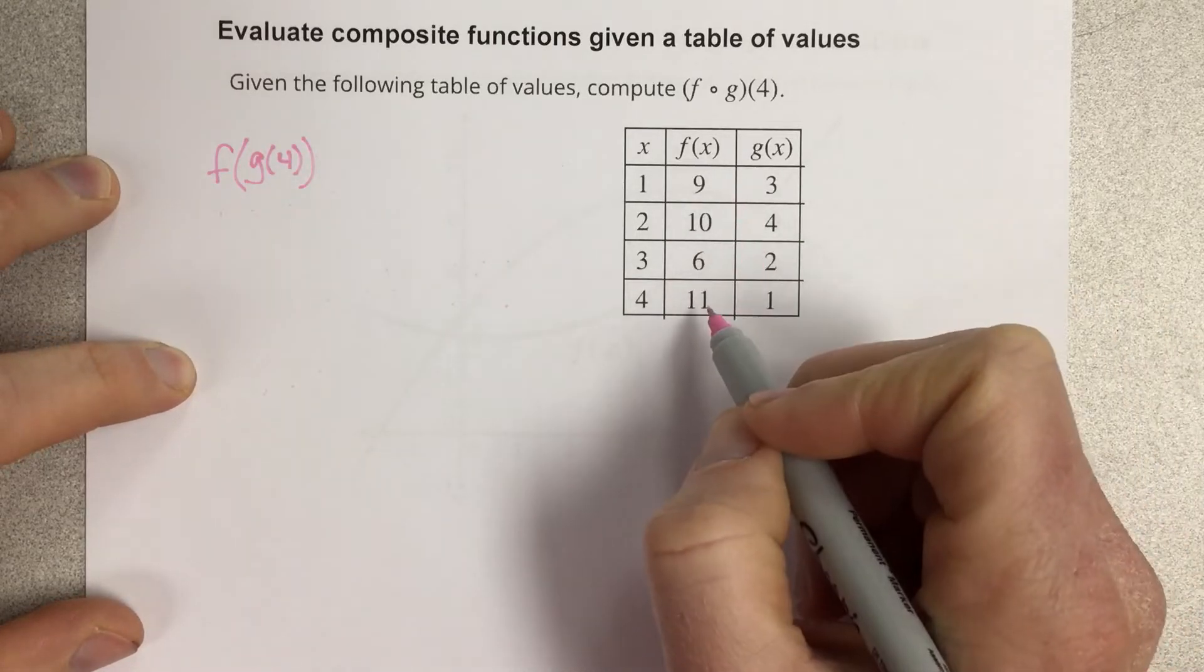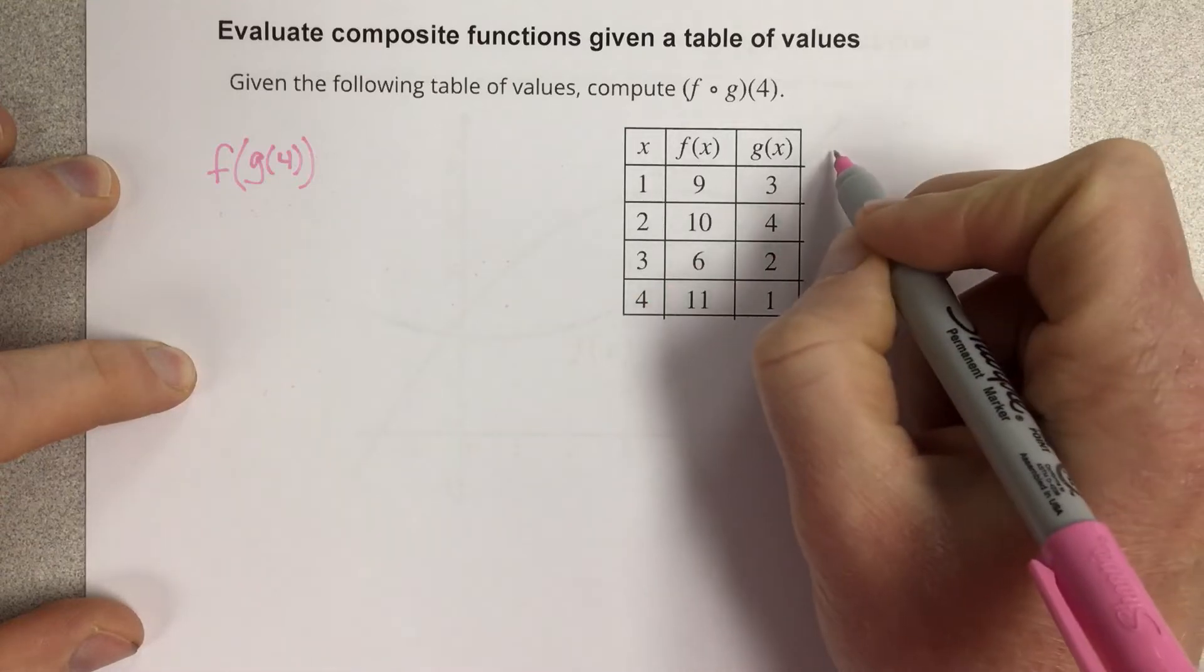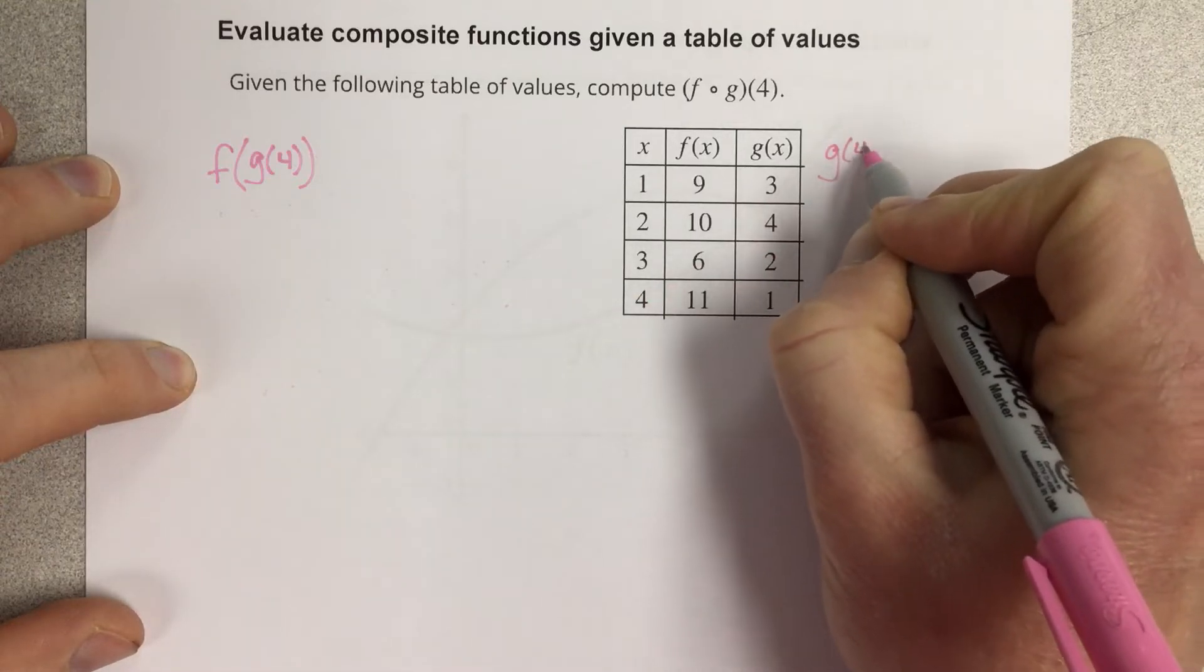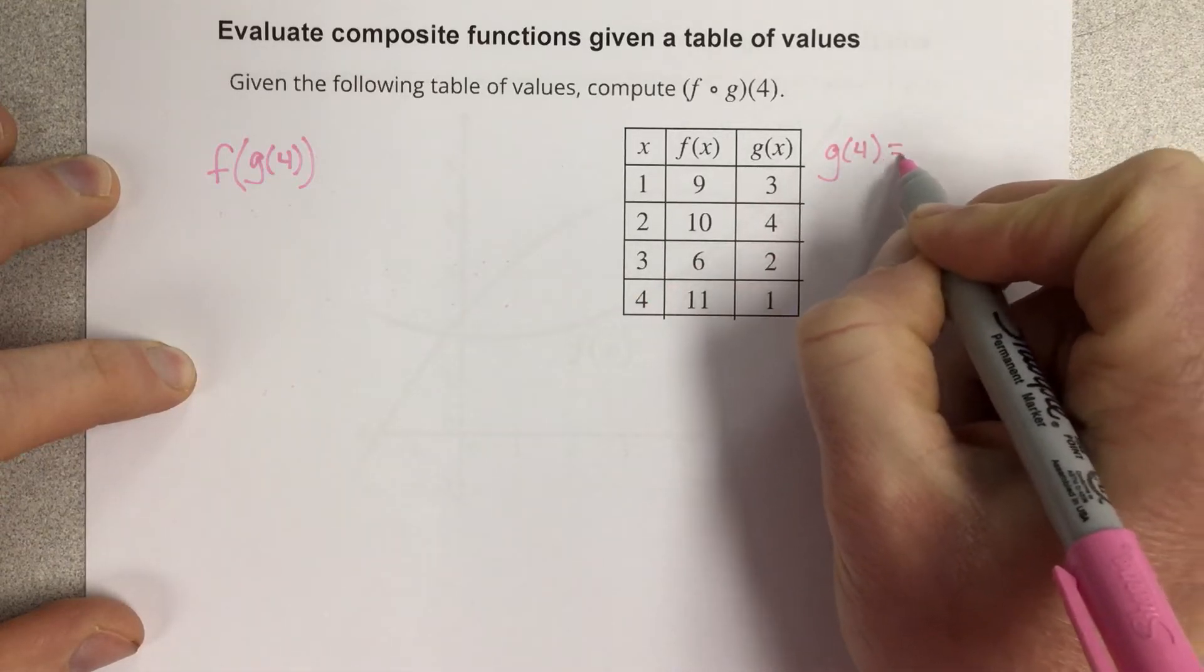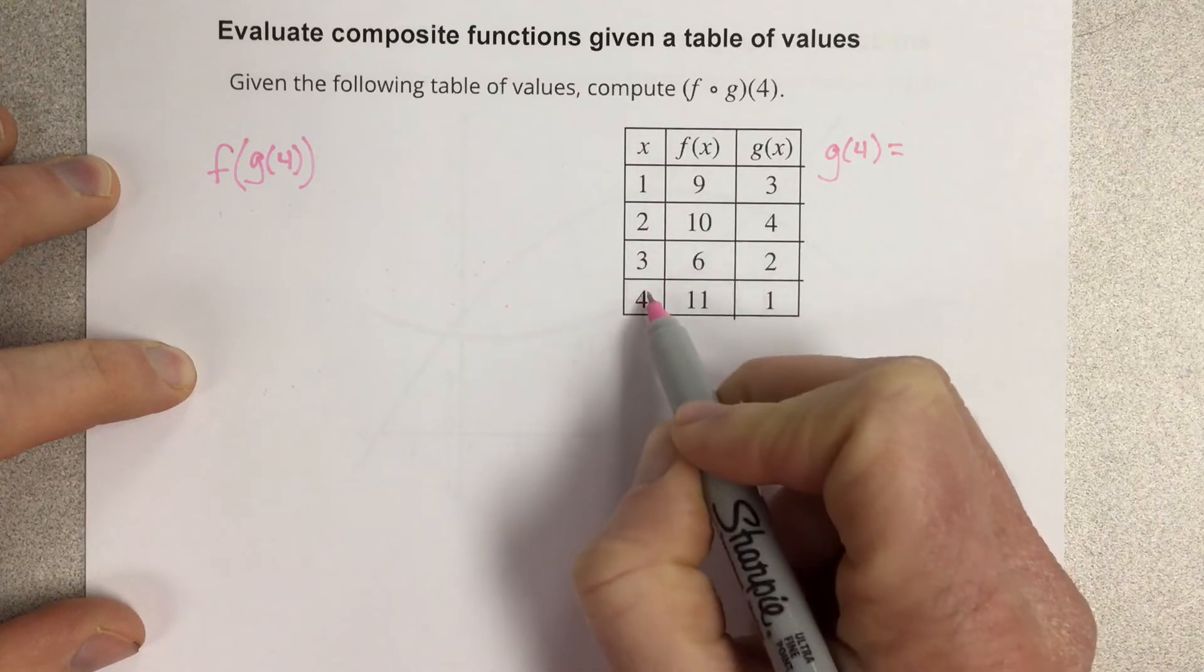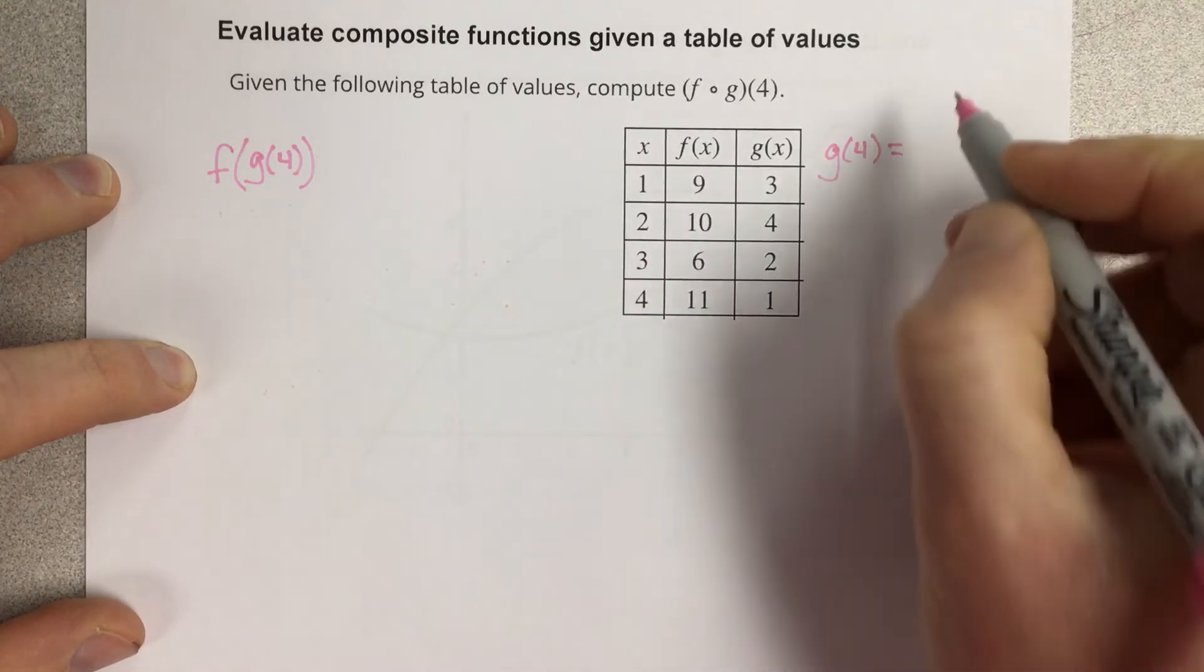So let's go ahead and figure out what g of 4 is. g of 4 would be equal to, go to the 4 value for x, so x is 4. Look at the g function, that's 1.